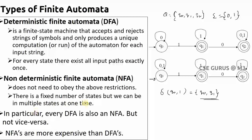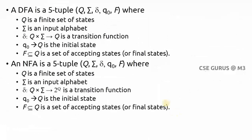In NFA there is a fixed number of states but we can be in multiple states at one time — for example on q0 with input 1, we may be in q0 or q1 simultaneously. Every DFA is also an NFA but not vice versa. NFAs are more expensive than DFAs because in a DFA there is exactly one path to follow, whereas in NFA you may have more than one path and need to check all of them.